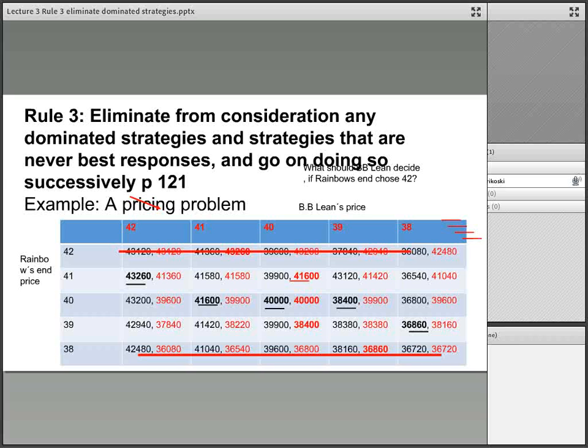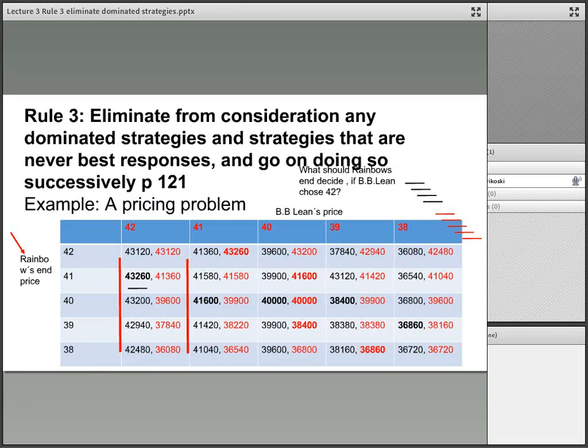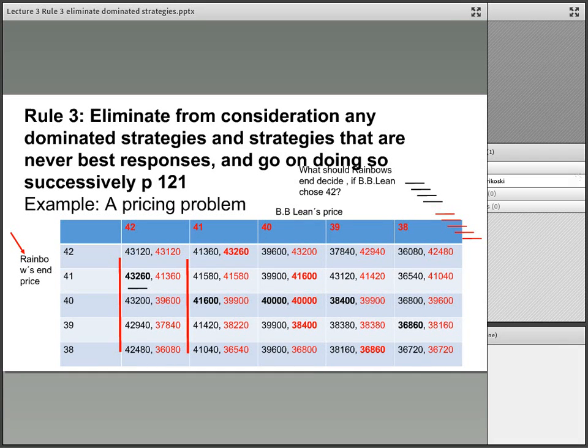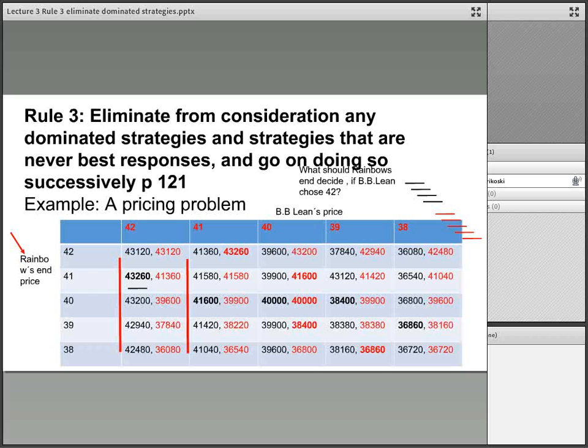Now, following this logic, you go on to 41. What if BB Lean chooses 41? Your best option is the 41,600. You look at 40, your best option is 40,000. For 39, it's 38,400. And then 38, your best option is 36,860. Hence, the ones in bold and black are your best options, in other words, your best responses.